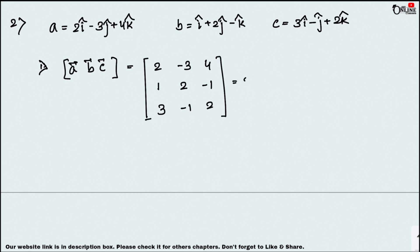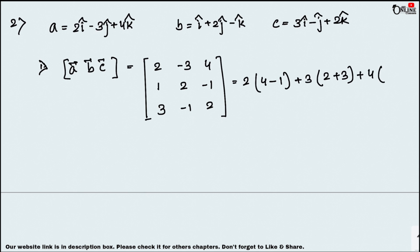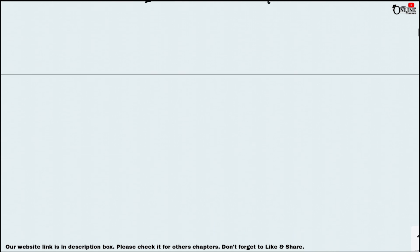Expanding the determinant: 2×(4−1) − 3×(2+3) + 4×(−1−6) = 2×3 − 3×5 + 4×(−7) = 6 − 15 − 28 = −37. Wait, the answer given is −7. So that one equals −7.